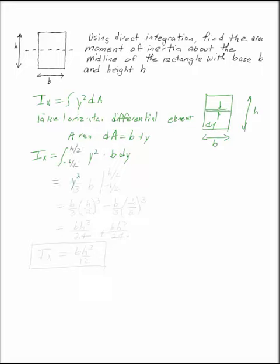If you take the integral, you get y cubed over 3 times b from h over 2 and negative h over 2. You plug that in. Because you've got two negatives and that one's cubed, that's going to be a positive number. So I've got b h cubed over 24 plus b h cubed over 24.